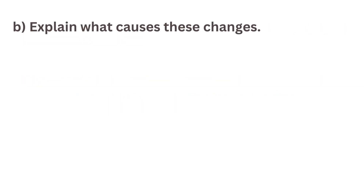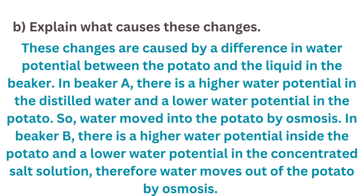B. Explain what causes these changes. These changes are caused by a difference in water potential between the potato and the liquid in the beaker. In beaker A, there is a higher water potential in the distilled water and a lower water potential in the potato, so water moved into the potato by osmosis. In beaker B, there is a higher water potential inside the potato and a lower water potential in the concentrated salt solution, so water moves out of the potato by osmosis.